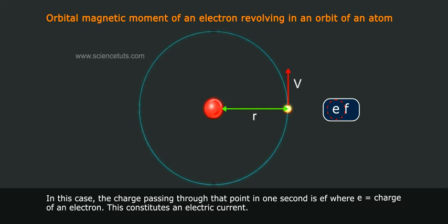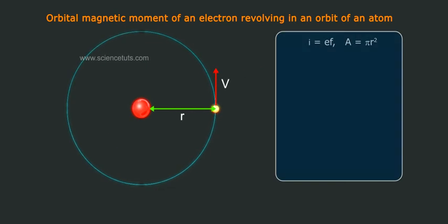charge of an electron. This constitutes an electric current I equals EF. Taking A equals pi R square,